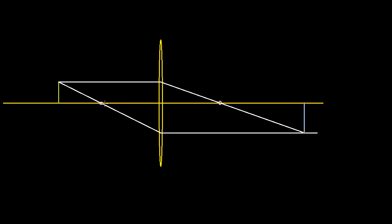We've been doing a bunch of these videos with convex lenses where we drew parallel rays and rays that go through the focal point to figure out what the image of an object might be. But what I want to do in this video is actually come up with an algebraic relationship between the distance of the object from the convex lens, the distance of the image from the convex lens, and the focal length. So let's see if we can do this.